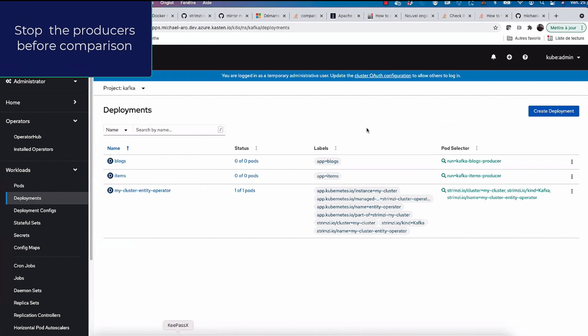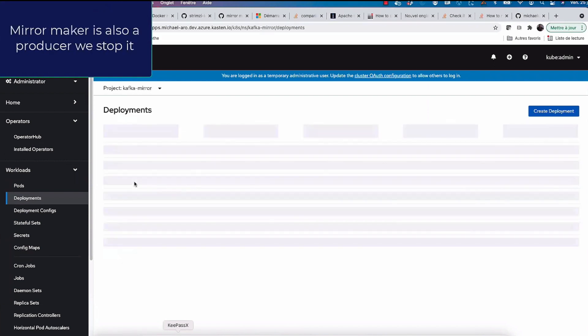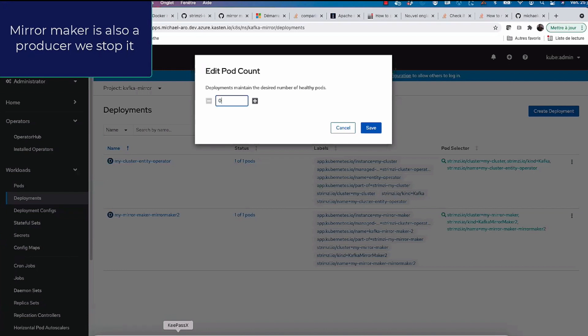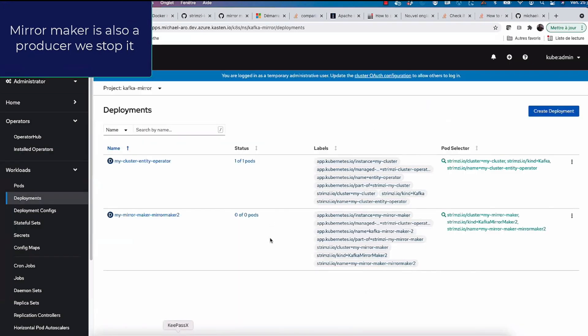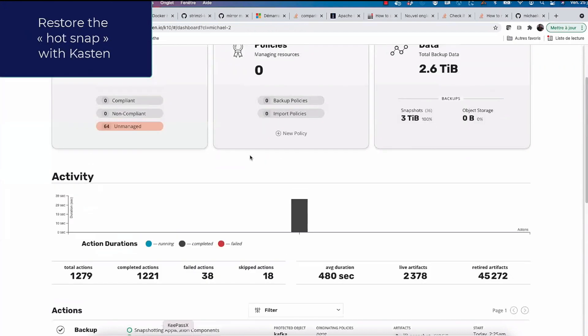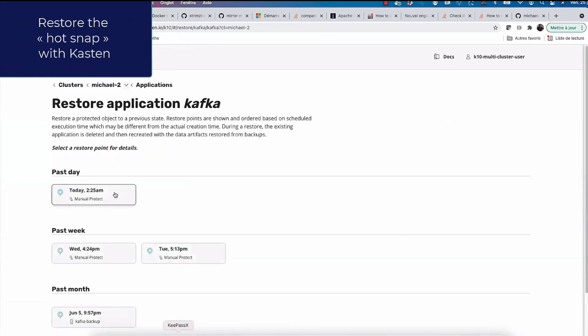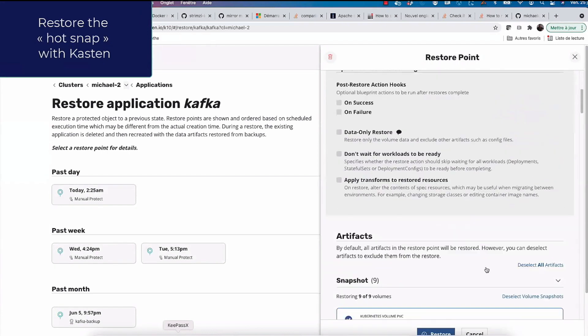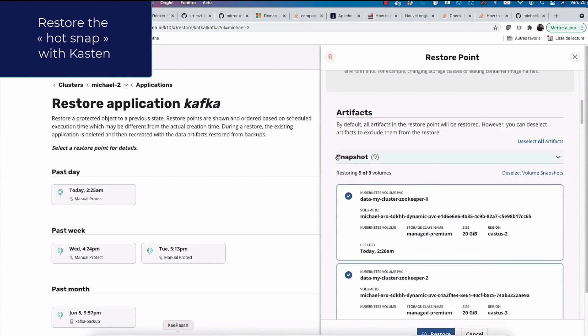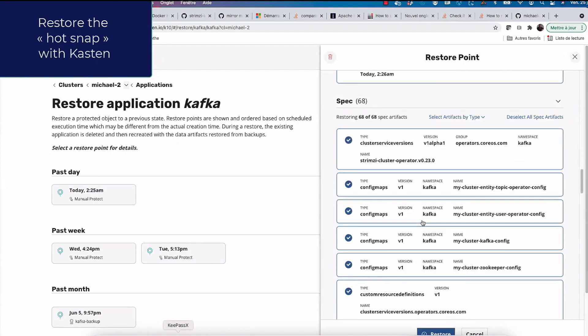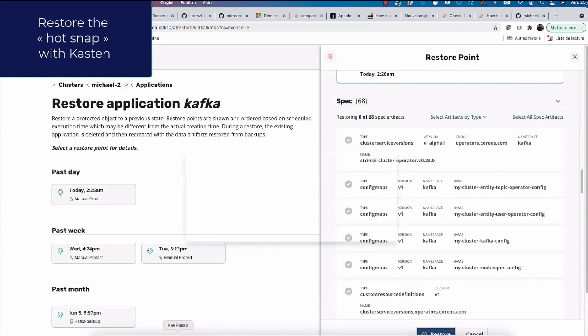So I'm going to stop the producers and I'm also going to stop the mirror maker. So let's do a restore. I just go to the Kafka namespace. I find my restore point and I restore. I restore just the volumes. I don't need to restore the specification. I mean, the config did not change. So I just exclude them from the restore point and I click on restore.